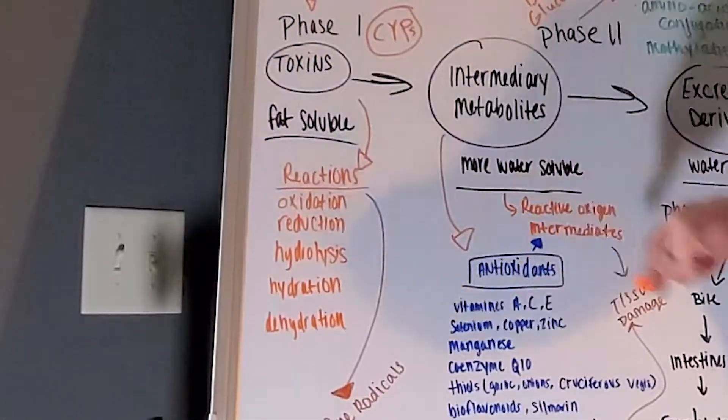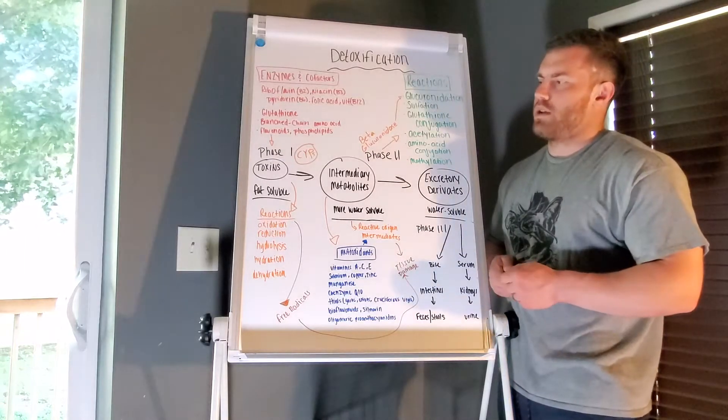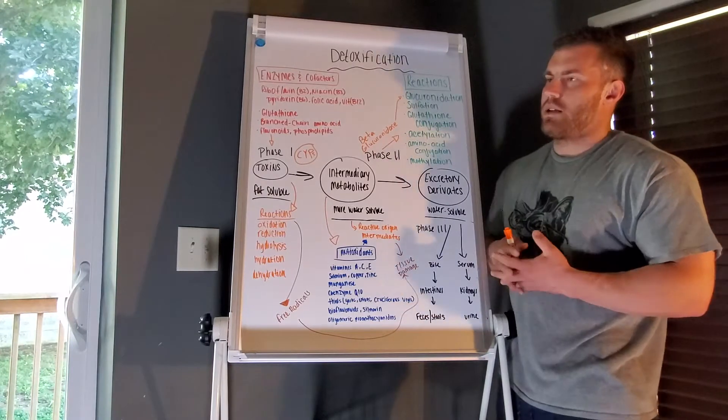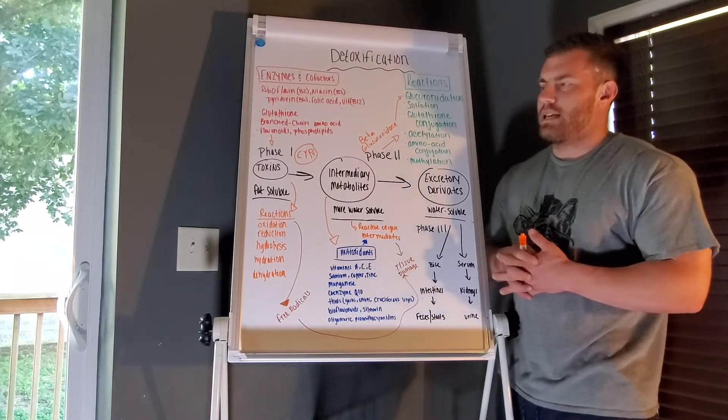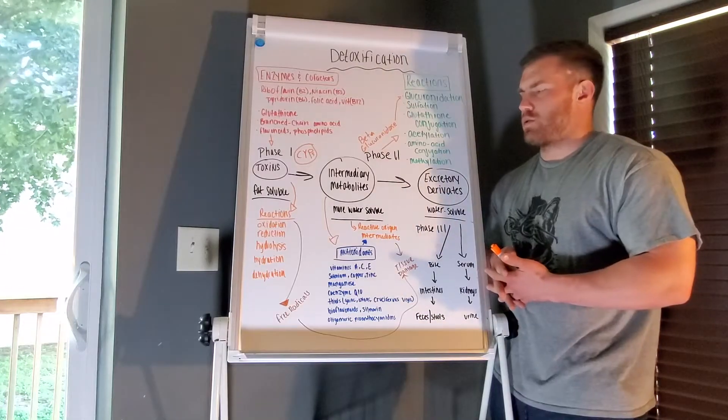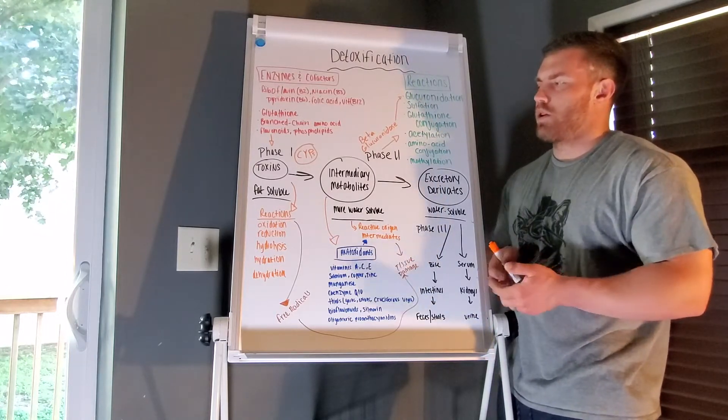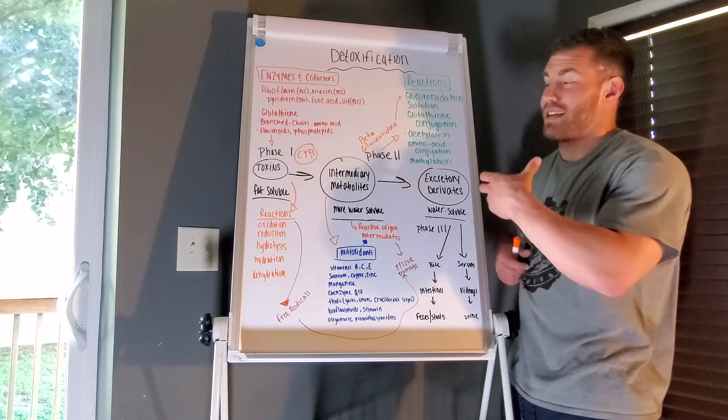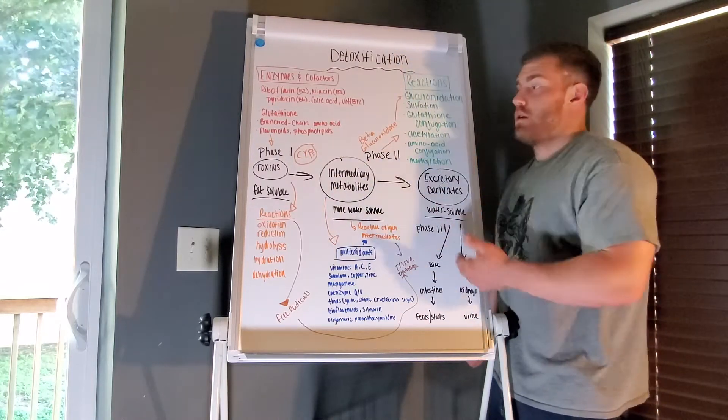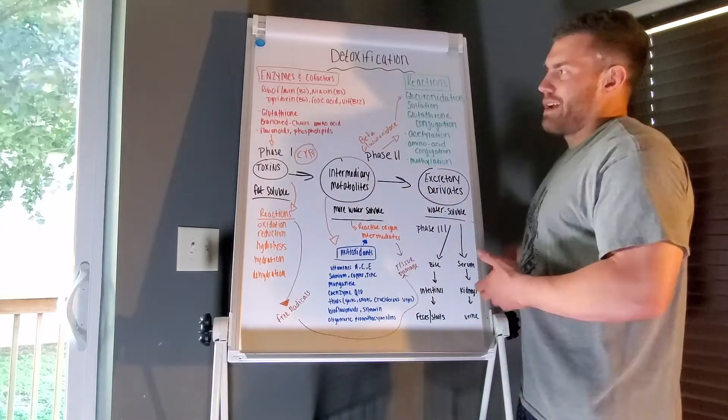If we look here, in Phase 1, a lot of what we're doing is breaking things down into more easily excretable compounds or substances. A lot of the fat-soluble molecules are trying to be broken down into a more water-soluble molecule so it can be excreted.